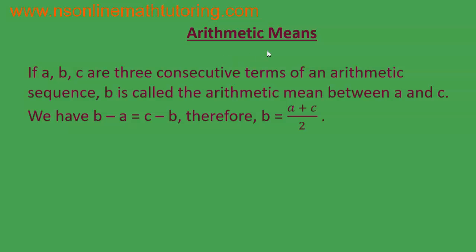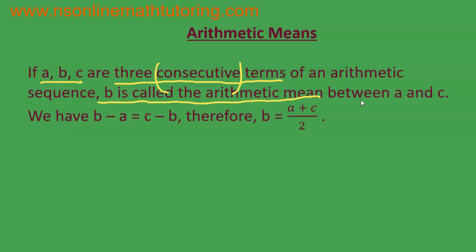Now we come to the arithmetic means part. What is the meaning of arithmetic means? If a, b, and c are three consecutive terms — this is important — consecutive terms of an arithmetic sequence, then b is called the arithmetic mean between a and c. Since these three are consecutive terms of an arithmetic sequence, there will be a common difference.